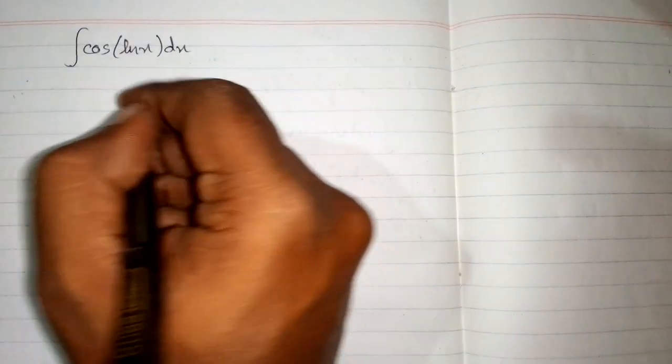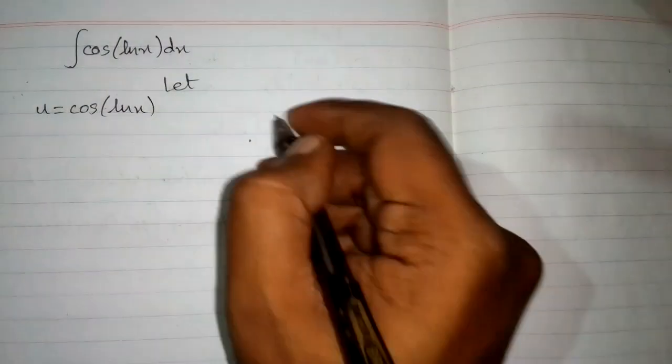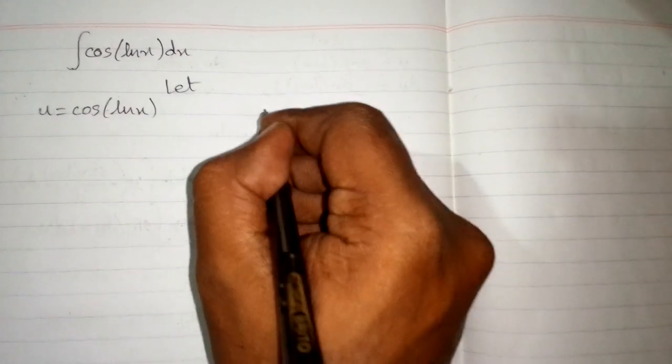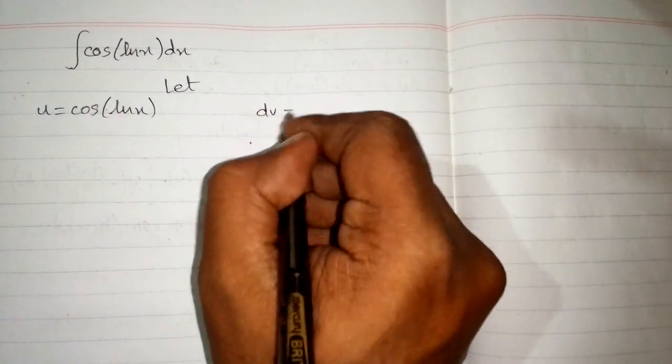In this video we will find the integral of cosine of ln of x. We can integrate this function by using integration by parts. So first let u equal cosine of ln of x, and dv equal dx.